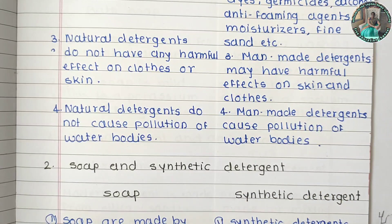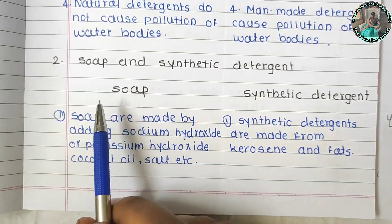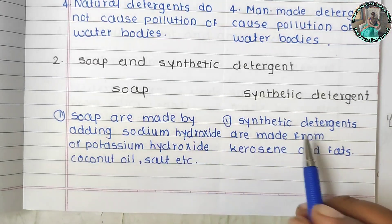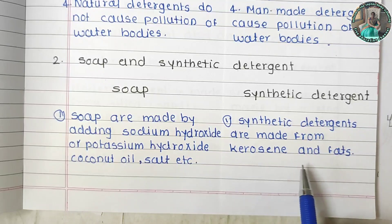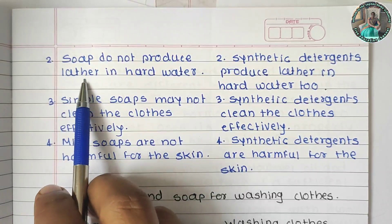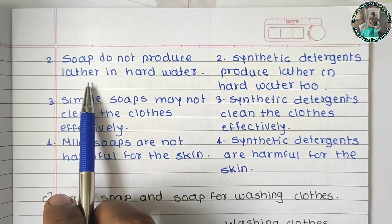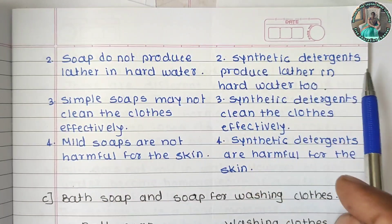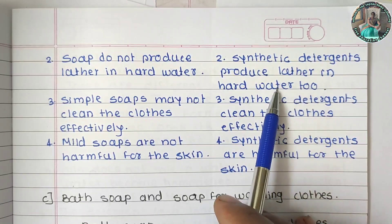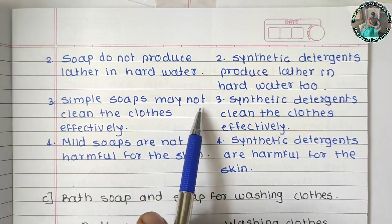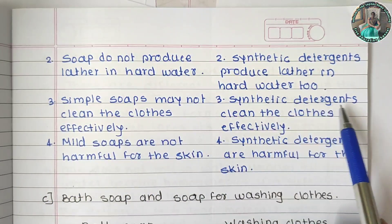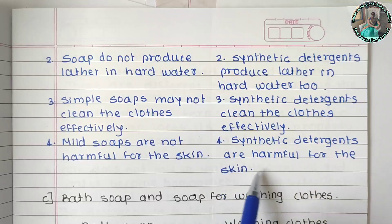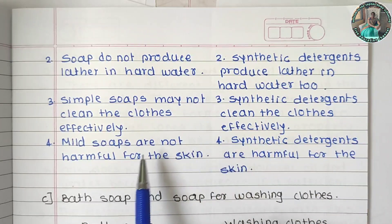Comparing soap and synthetic detergents: Soap is made by adding sodium hydroxide or potassium hydroxide, coconut oil, and salt, whereas synthetic detergents are made from kerosene and fats. Soap does not produce lather in hard water, but synthetic detergents produce lather even in hard water. Mild soaps are not harmful for the skin, while synthetic detergents can be harmful for the skin.